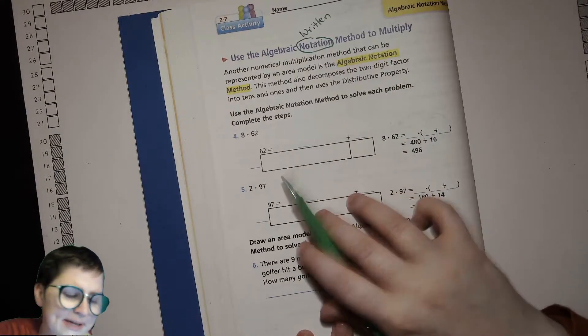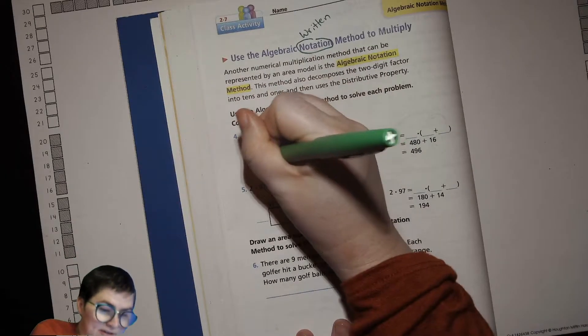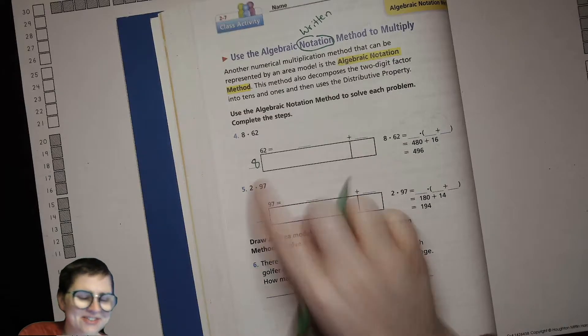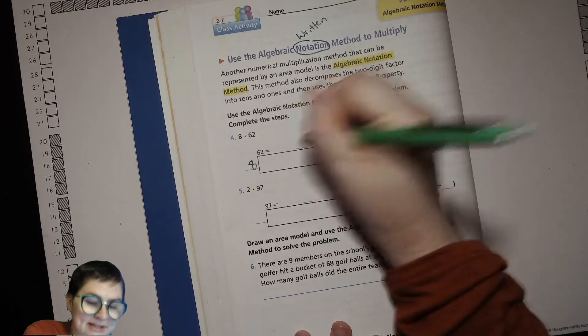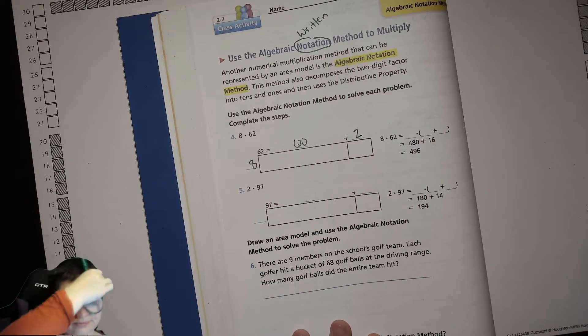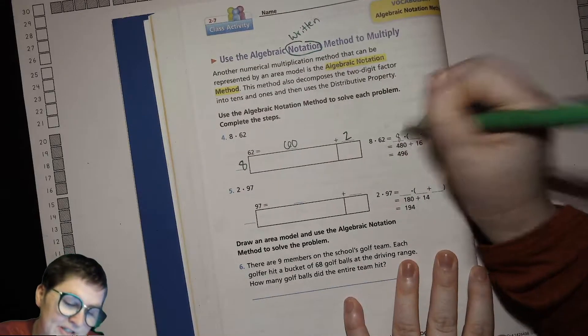Rather than with the expanded notation method, it's written out with the partial products underneath. It's just a little bit more streamlined. This is also probably what your parents might be more familiar with if they're doing it in this horizontal fashion. Use the algebraic notation method to solve each problem, complete the steps.